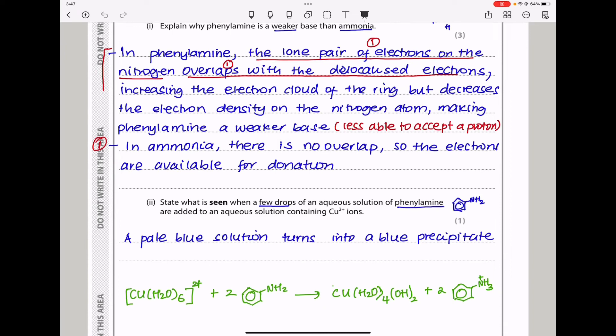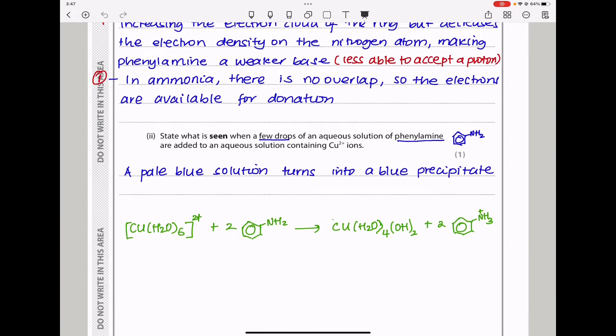State what is seen when a few drops of aqueous phenylamine are added to aqueous solution containing copper-2 ions. A deprotonation reaction occurs, and the pale blue solution turns into a blue precipitate. Two ligands each lose a hydrogen, forming this compound with two of them reacting to remove two hydrogens total from two water ligands. A pale blue solution will turn into a blue precipitate.